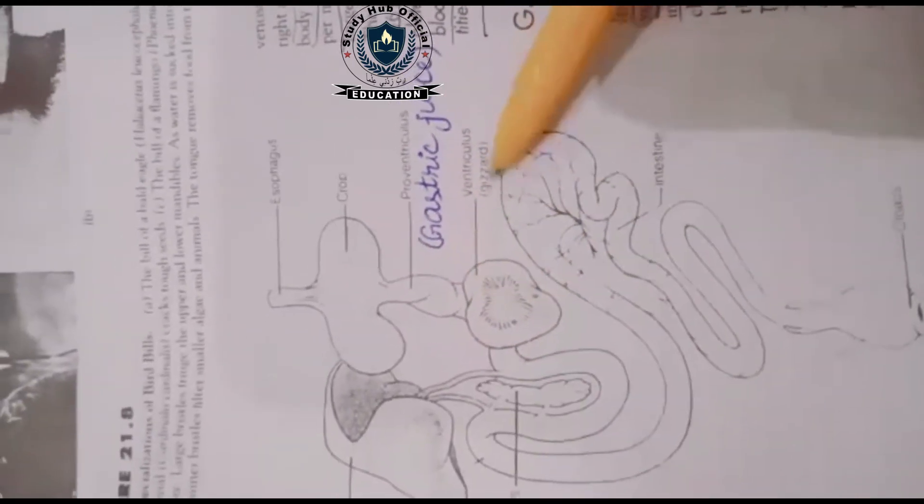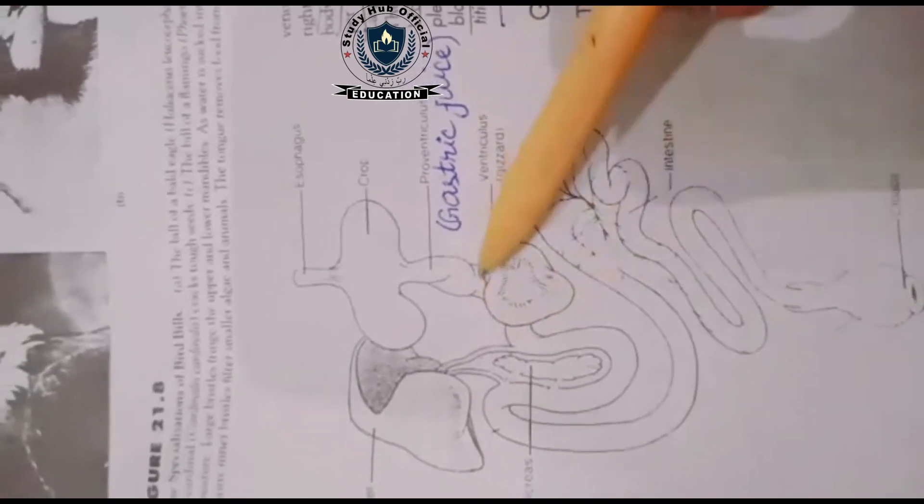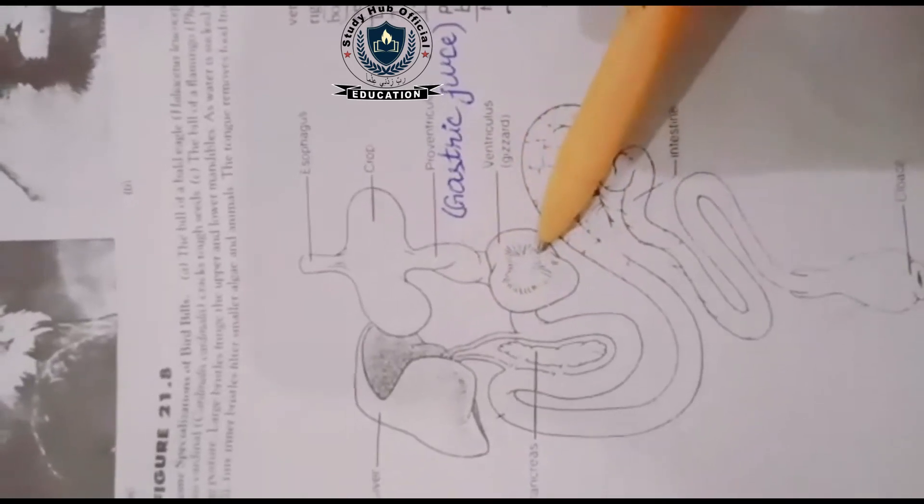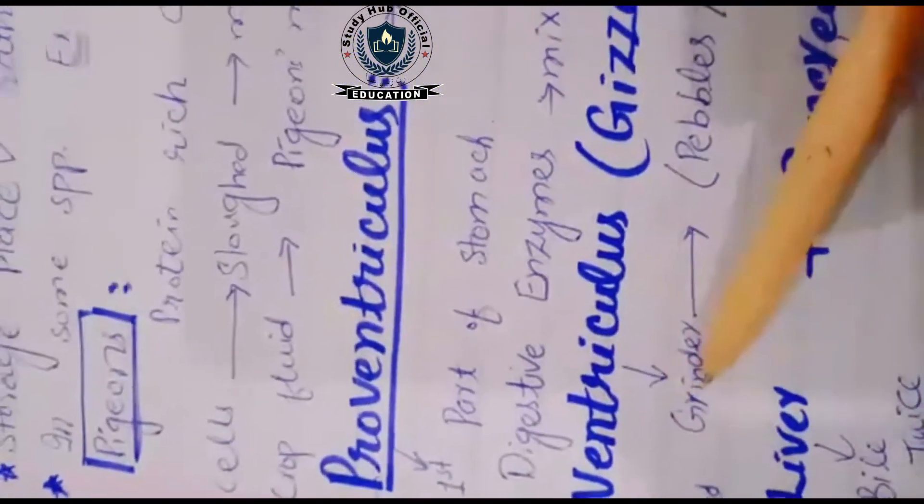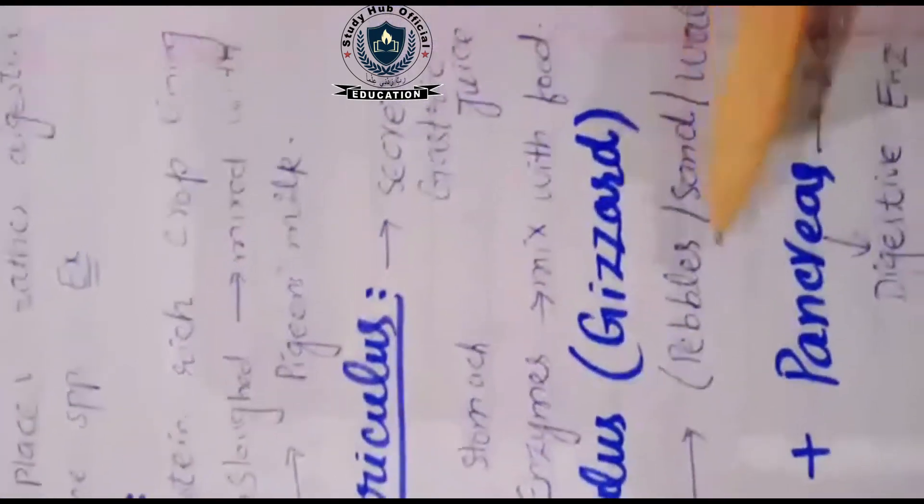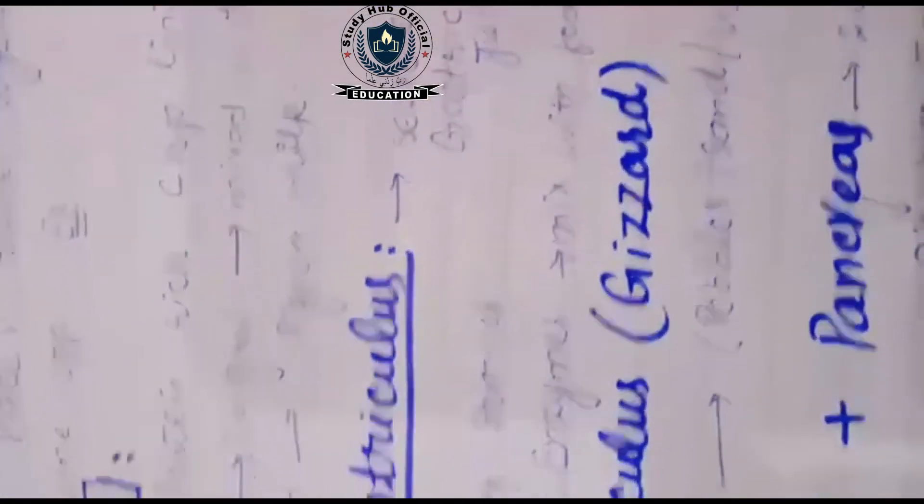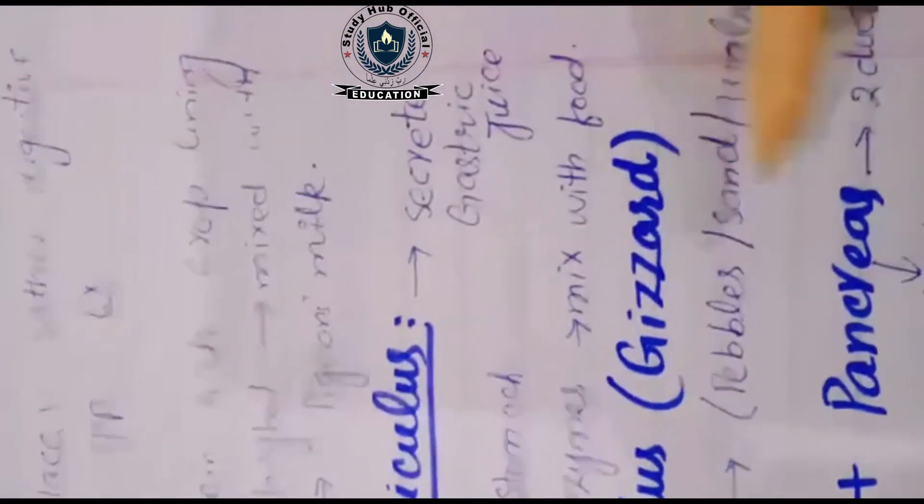Next, after the proventriculus portion, is the ventriculus. This is the second part, and this is an important part. The structure is keratinized. It helps as a grinder because birds eat different particles and nuts and things, so it helps to digest them. This structure we call the gizzard.